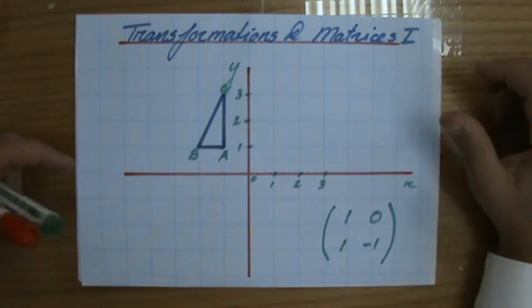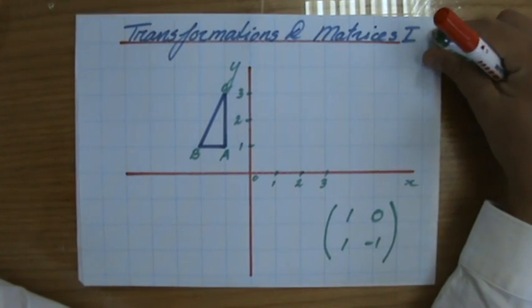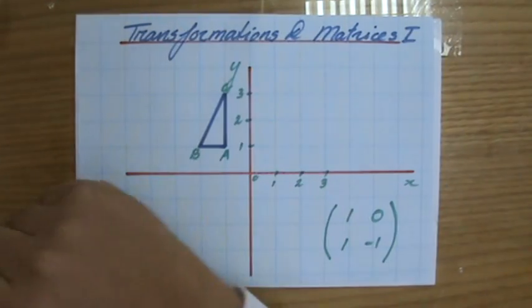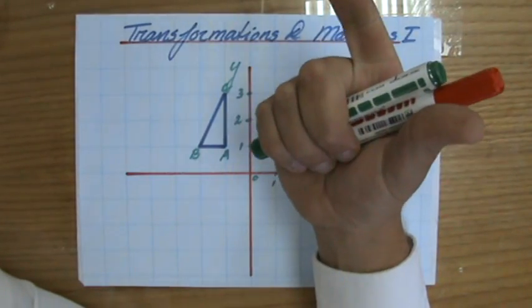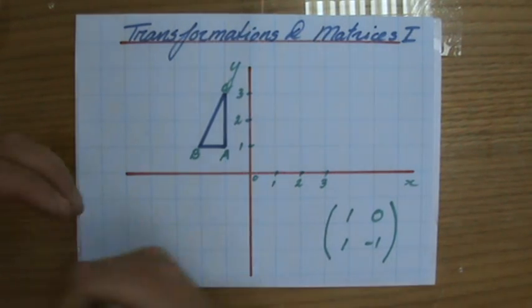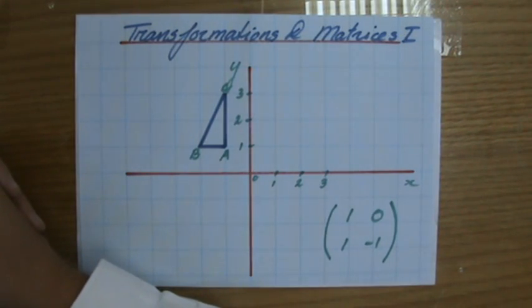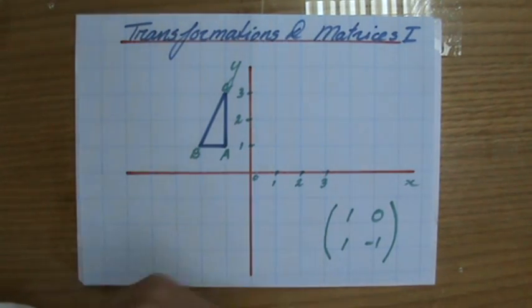Welcome to these videos about transformations and matrices. We've done several types of transformations so far: reflections, rotations, translations, and enlargements. A transformation is when the position or the shape, and sometimes both, of a particular object changes.